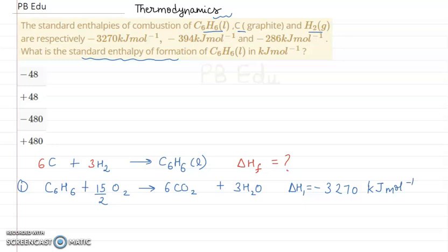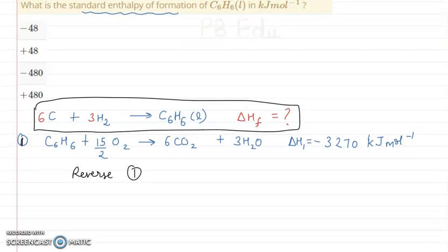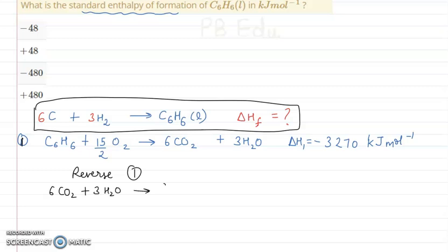In the required reaction, C6H6 is on the product side. So we must reverse the first combustion reaction, placing C6H6 on the right-hand side. On reversing, the enthalpy sign changes: 6CO2 plus 3H2O goes to the reactant side, and C6H6 plus 15/2 O2 goes to the product side. So ΔH1' = +3270 kJ/mol. We name this equation A.